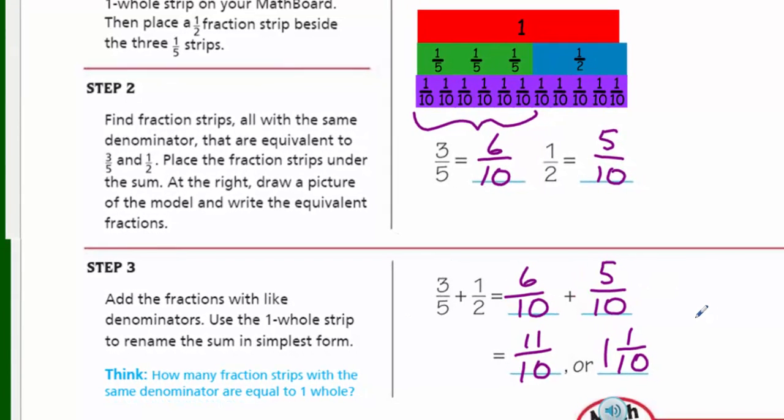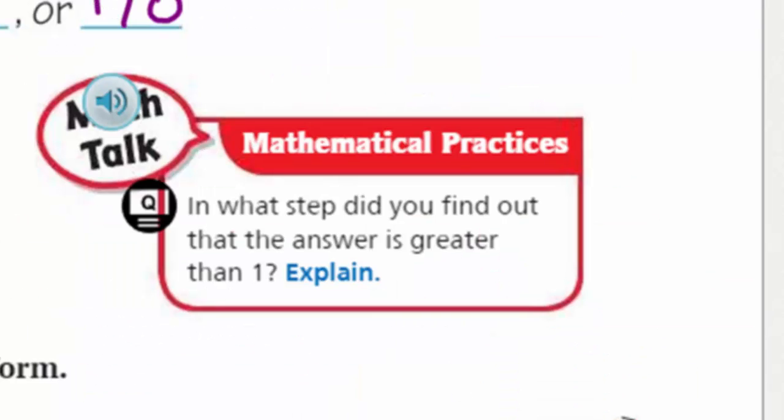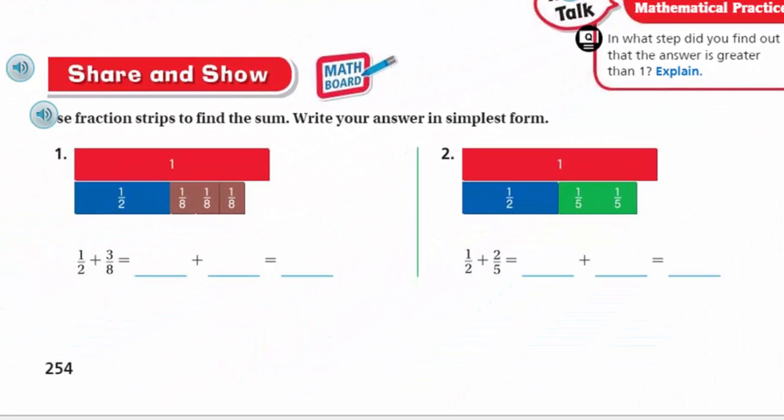I'm just loving this. It says, what's this here? It says, think how many fraction strips with the same denominator are equal to one whole. We kind of thought that out already, so let's move on down. Now we have, it says, in what step did you find out that the answer is greater than one? Explain. Try and remember when we noticed that. Probably, probably as early as step one, right? Right at the top. Because when we lined up all our strips, our three one-fifth strips and our one-half, we noticed right away that it was larger than one whole, and I think I already mentioned that.